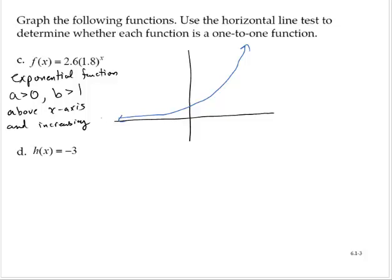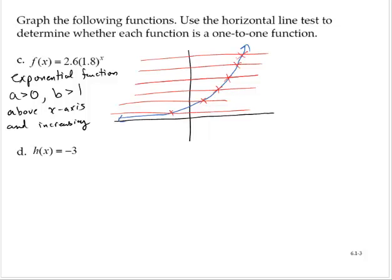Now again, take horizontal lines, pass them over the curve. Only hits once, only hits once, only hits once, once. All right. So from what we can see, any horizontal line that I pass over the curve only touches the curve once.